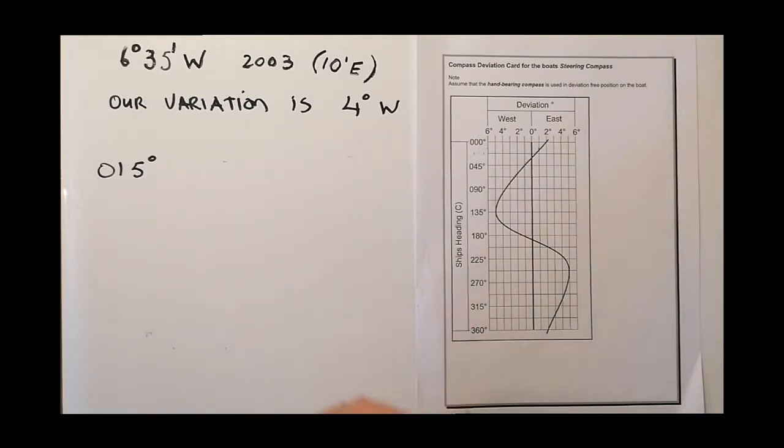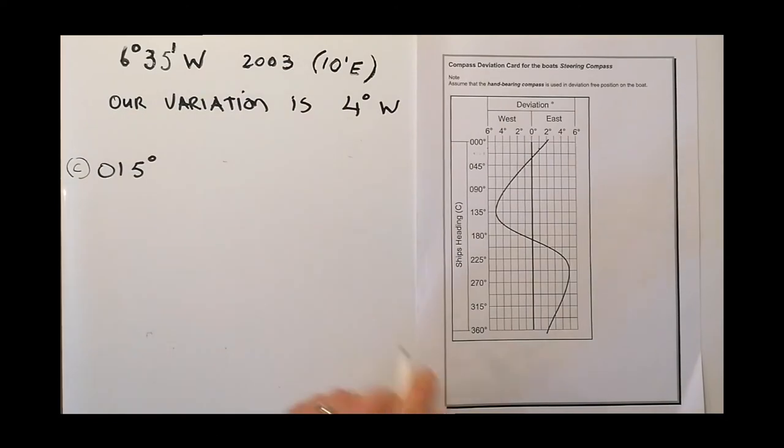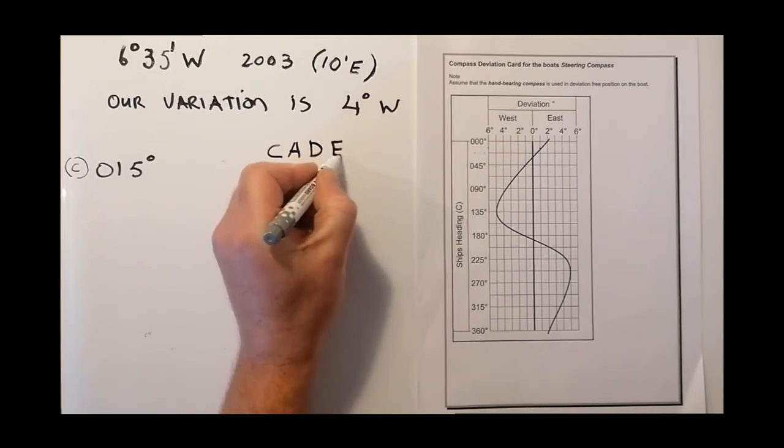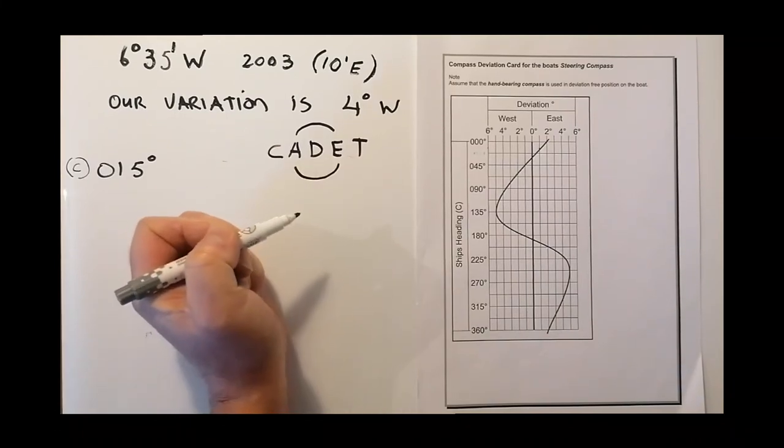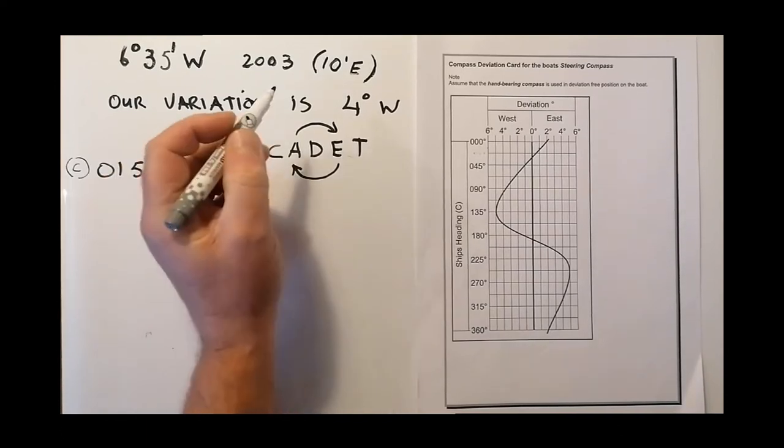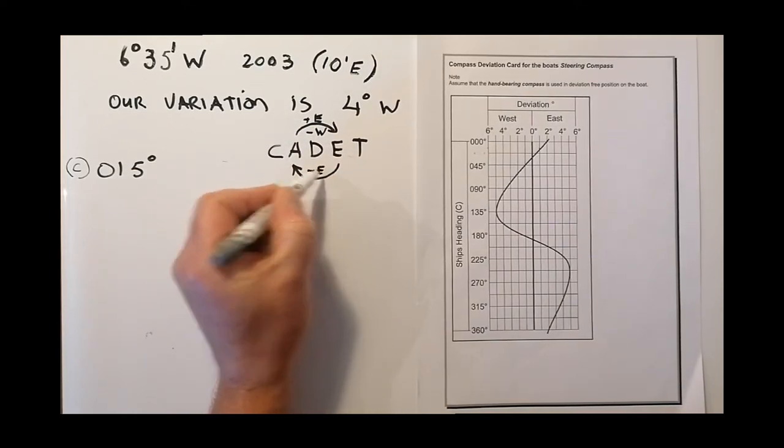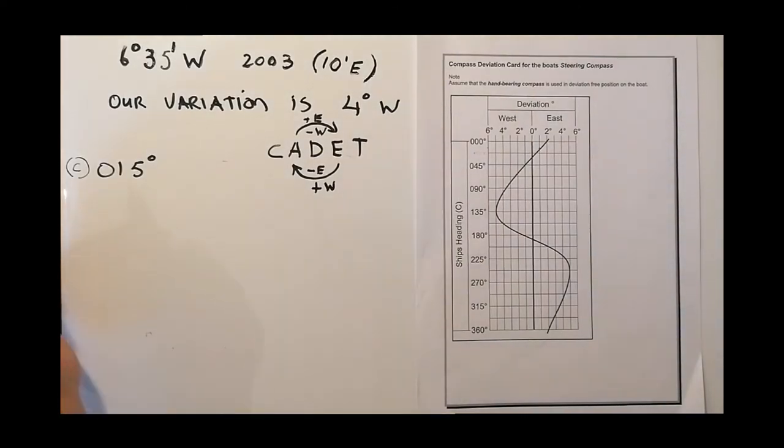Now to work out the true heading, there's a few things I need to know. From going from a compass reading to a true reading, there's a path to do it. There is a handy way to remember it too. If I go from compass, I need to add east. There's a handy word called CADET. I need to add east, subtract west. On this way, I subtract the east if I'm going from true to compass, and add west. We have our compass heading here, and we're reading 015 degrees.